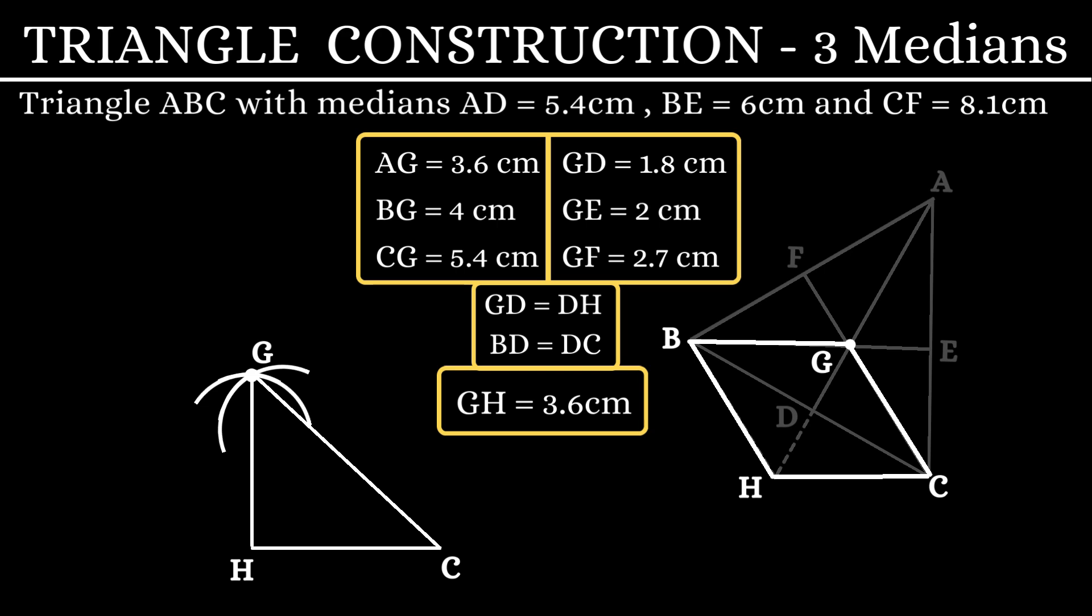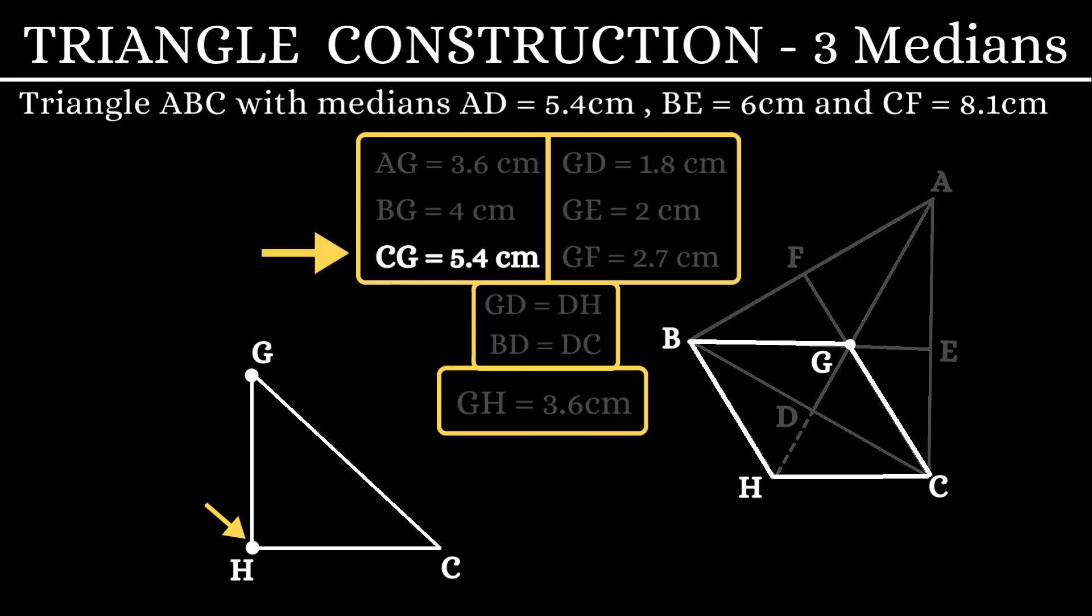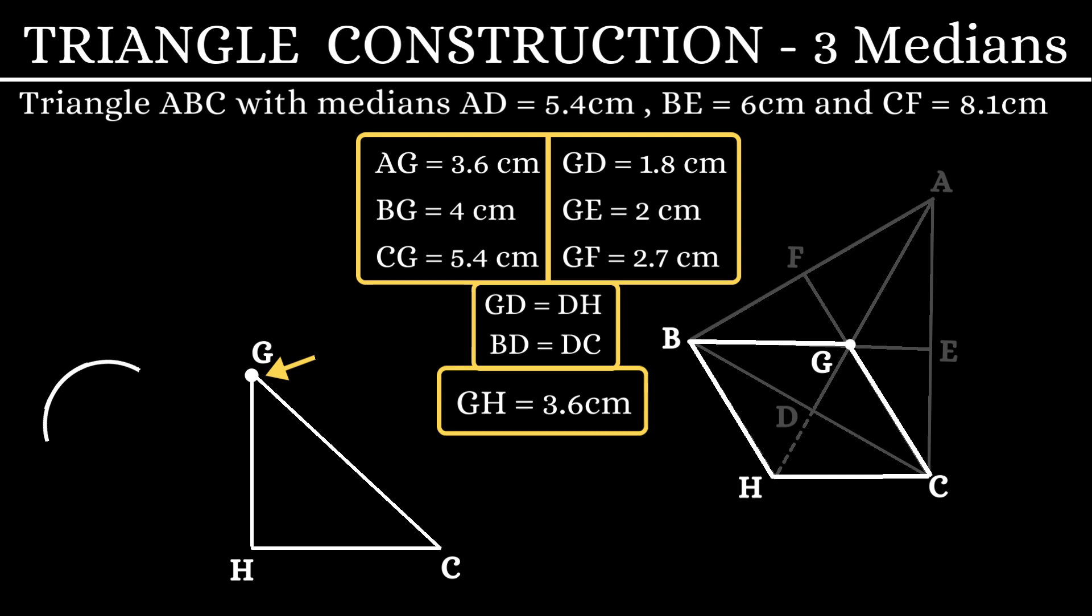Let us remember this point G is the centroid of our required triangle. Next, with H as the center and a radius of 5.4 cm, draw an arc here. With G as the center and a radius of 4 cm, draw another arc that intersects the previous arc at point B. Joining BG and BH we get the required parallelogram.